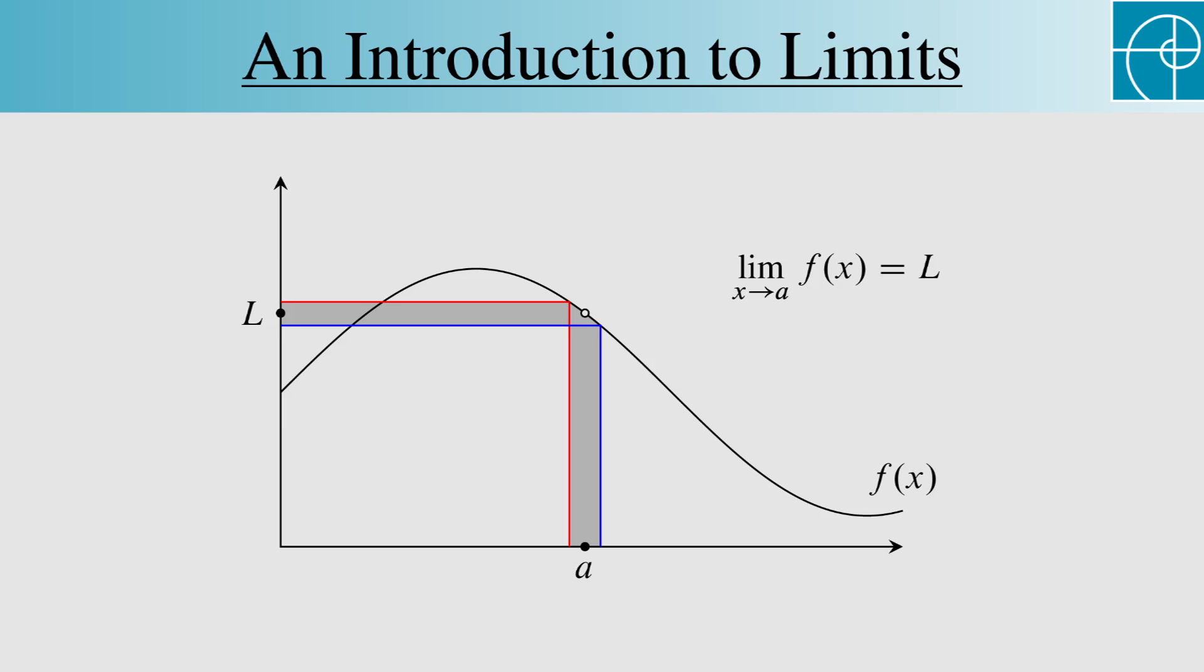Another way to look at what's happening here is to focus on a small rectangle around the point (a, L), which we'll magnify a bit here. To say that the limit as x approaches a of f equals L means that no matter how close we make the top and bottom of this rectangle, we can always find sides sufficiently close so the function never escapes the top and bottom between the two sides.